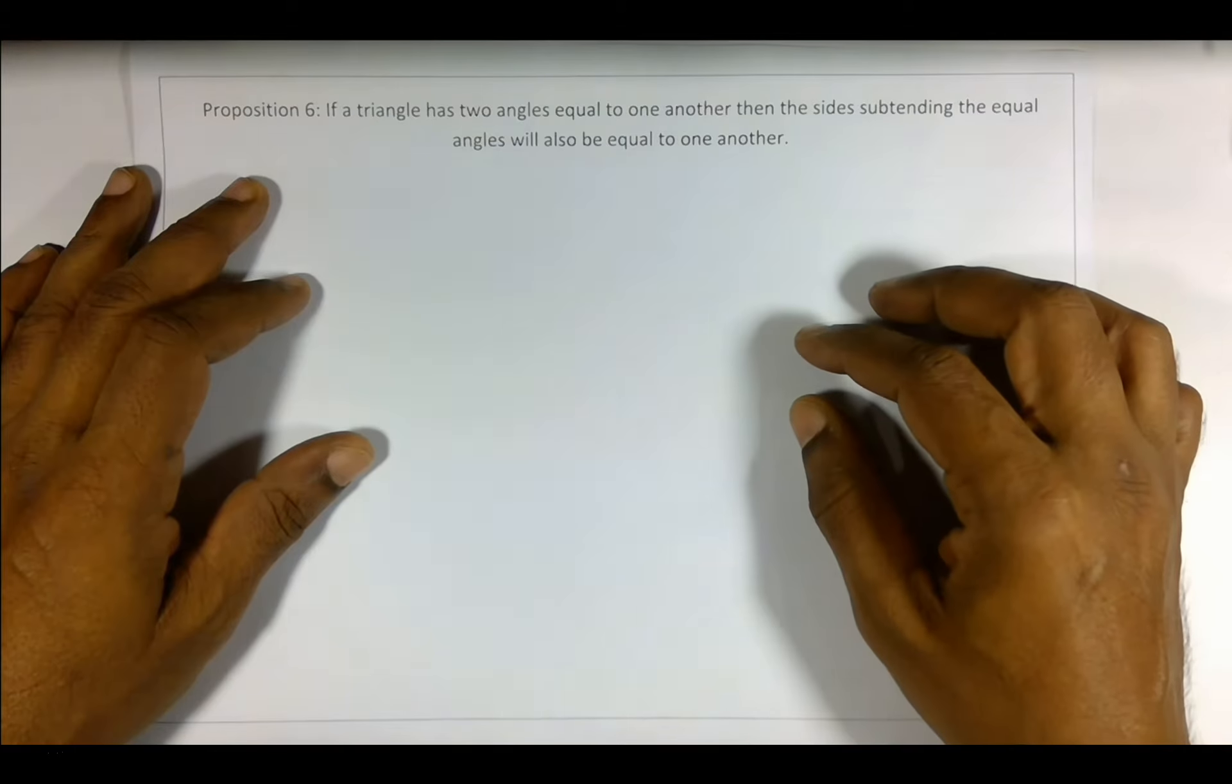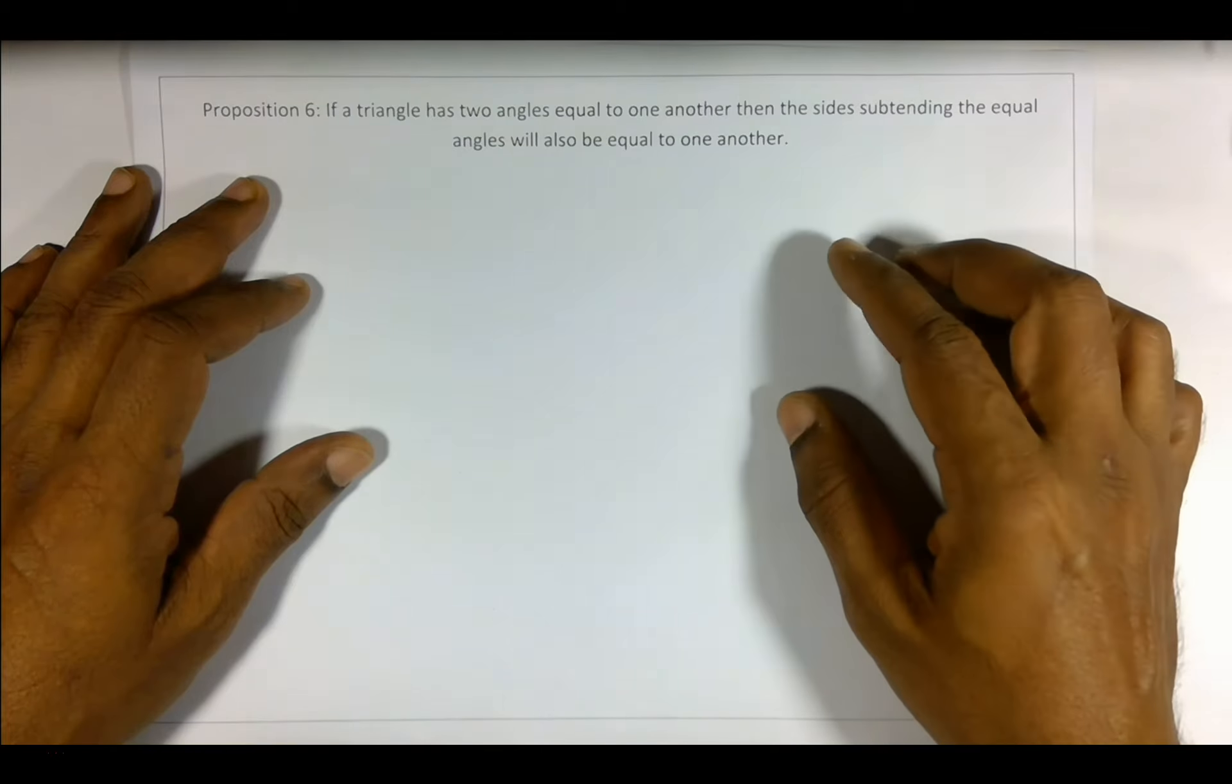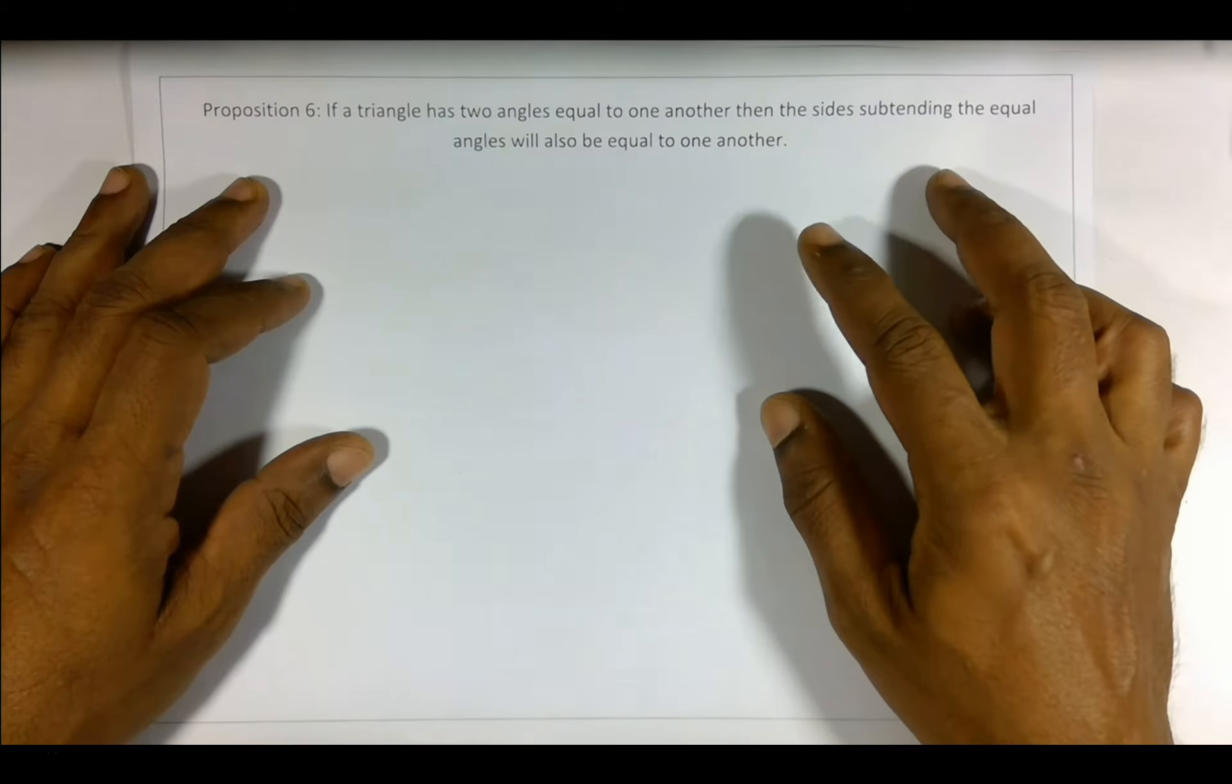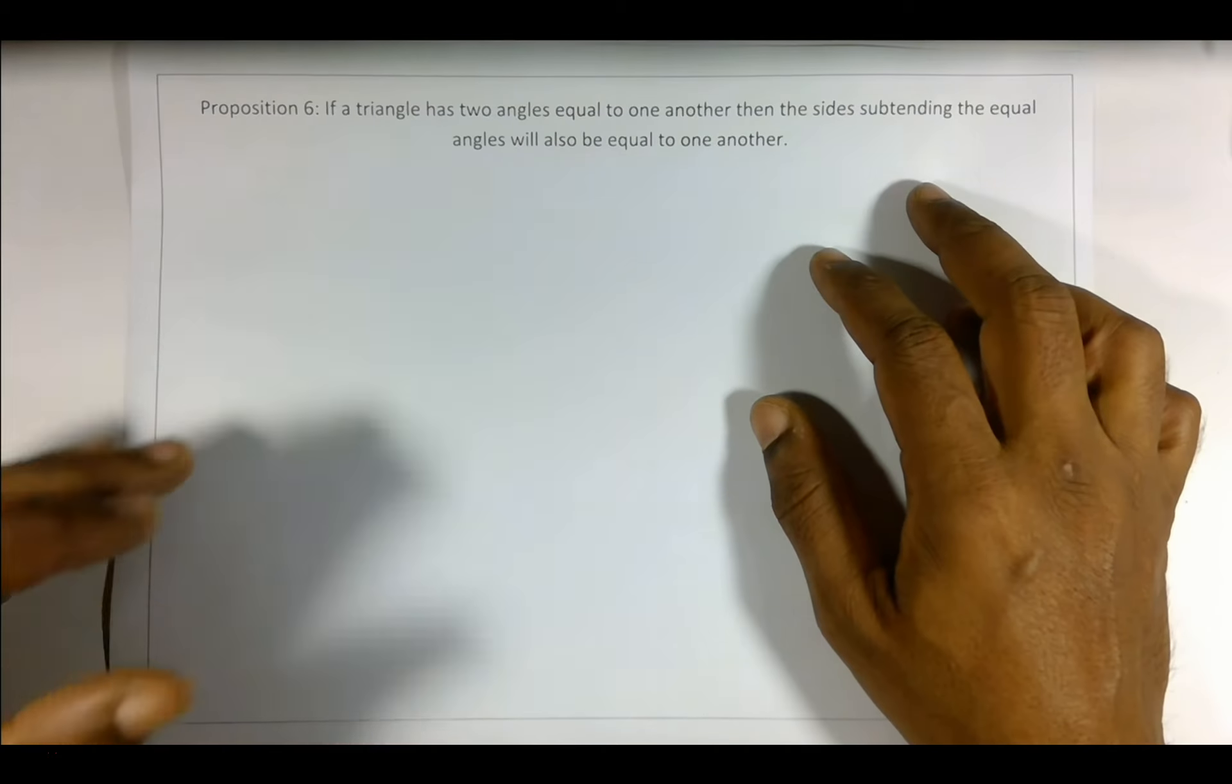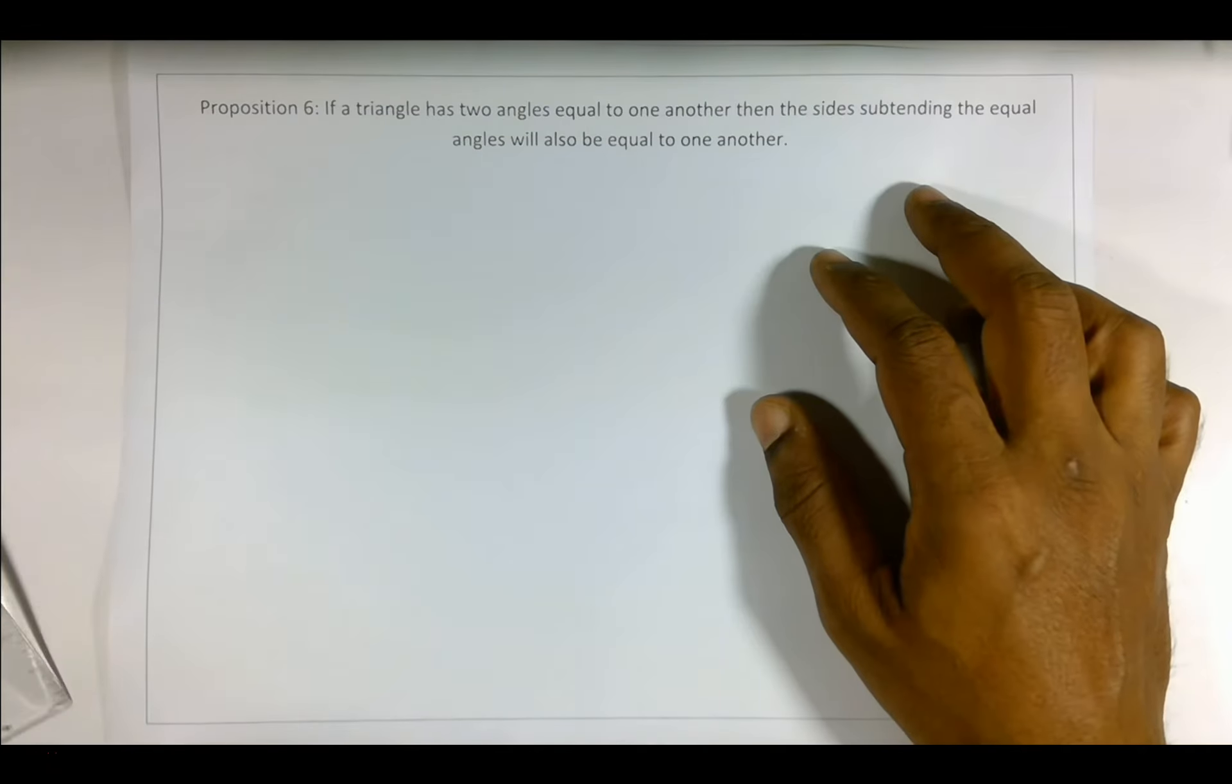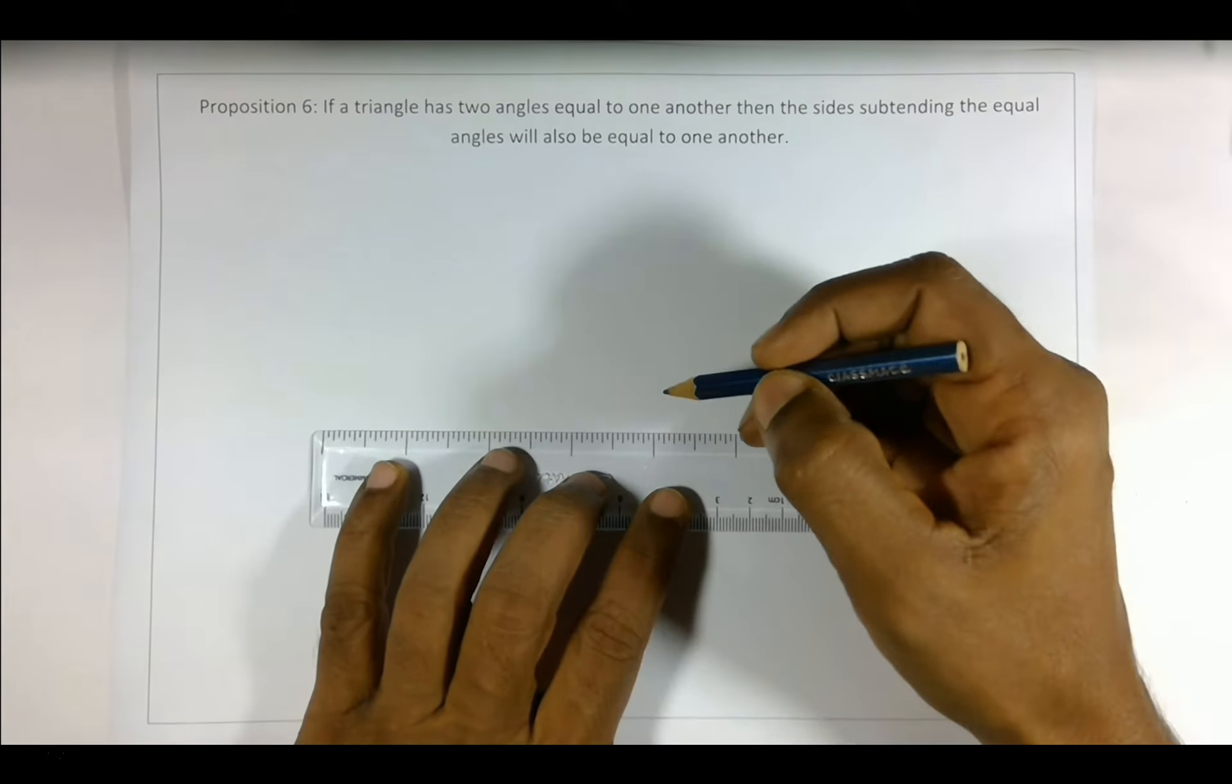Let's look at Proposition 6: If a triangle has two angles equal to one another, then the sides subtending the equal angles will also be equal to one another. So what this means is that if we have a triangle in which two angles are equal...